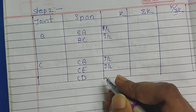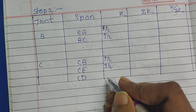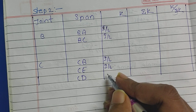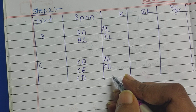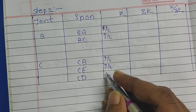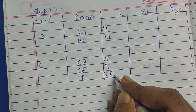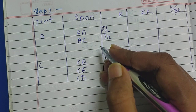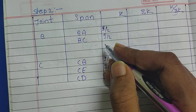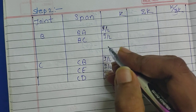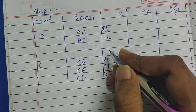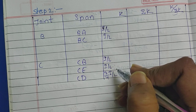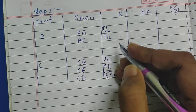When we consider span CD, end D is hinged. When the hinged support is at the end of the frame, we need to use the formula 3/4 × I/L. Note the difference: joint C appears hinged in the figure but it is at the center of the frame, so it uses I/L. End D is hinged at the end of the span, so it uses 3/4 × I/L.